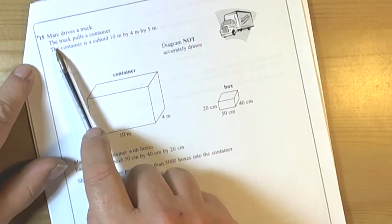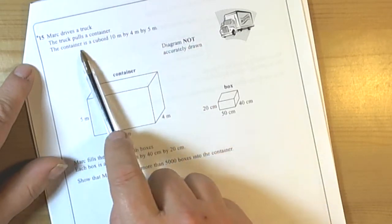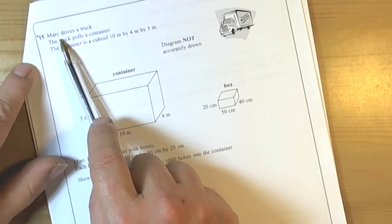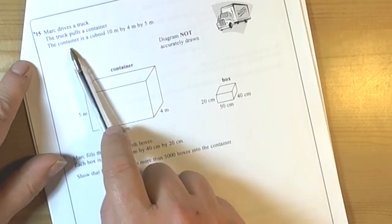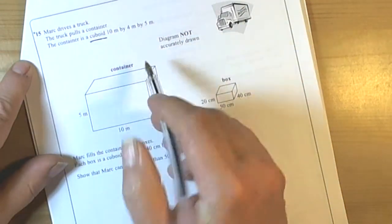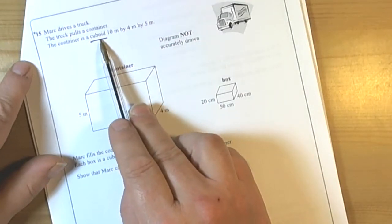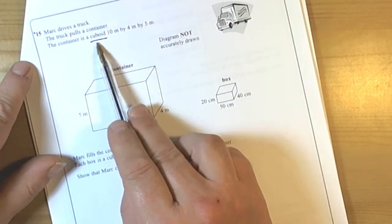We look at the context of the question to try and see what maths we're going to be using. It's talking about a container and a cuboid, which gives us a clue that we might be working with volume or area in some way.